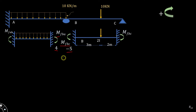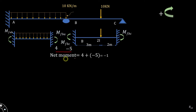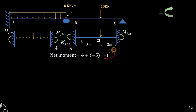The net moment at joint B should be equal to zero. But if we add these two moments, we get the net moment equal to minus 1. In moment distribution, clockwise moment is taken as positive. Here, this moment is coming out to be negative, so it is acting in the counterclockwise direction.